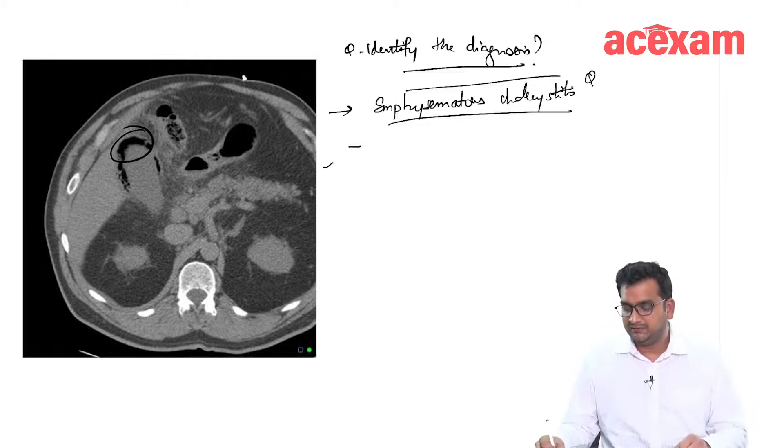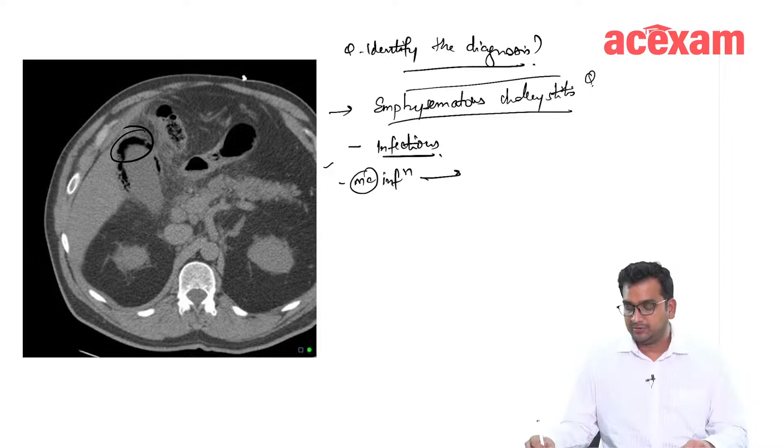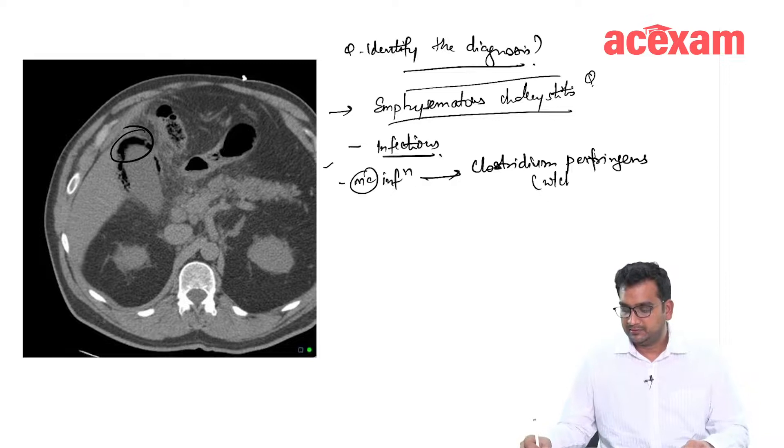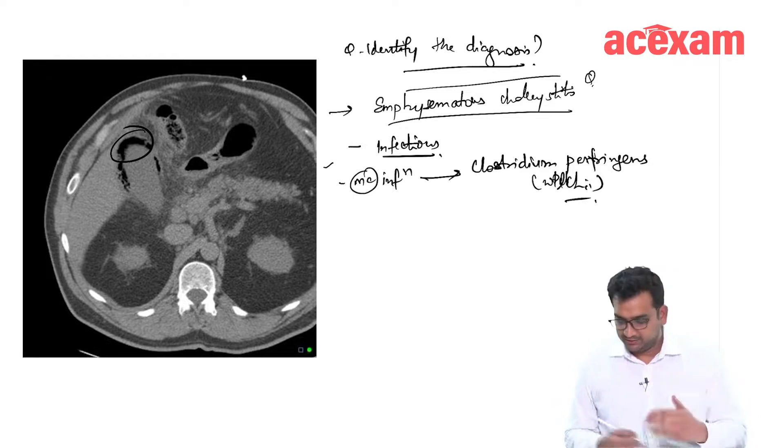This emphysematous gallbladder occurs because of infection. Which infection is the most common cause of emphysematous cholecystitis? It is Clostridium perfringens or Clostridium welchii, which causes emphysematous cholecystitis. This is a type of anaerobe.